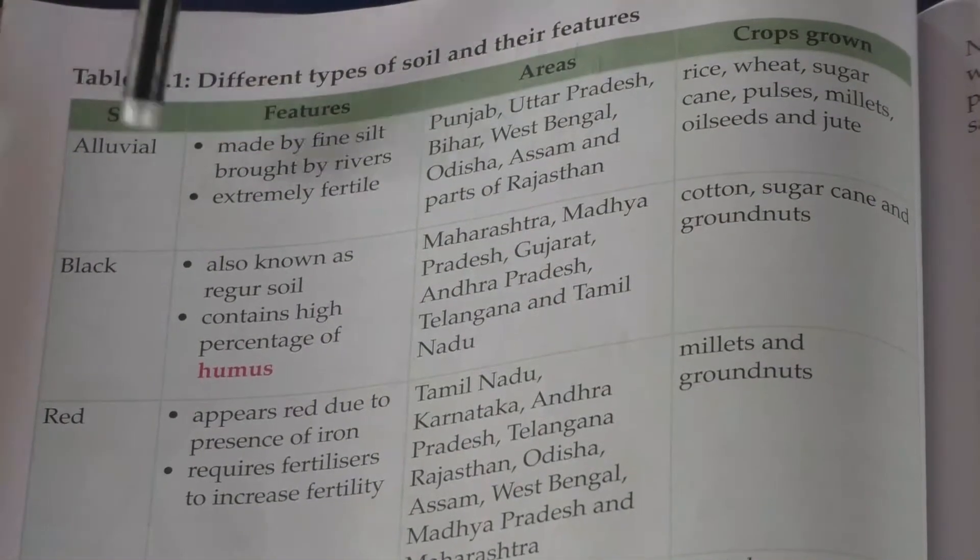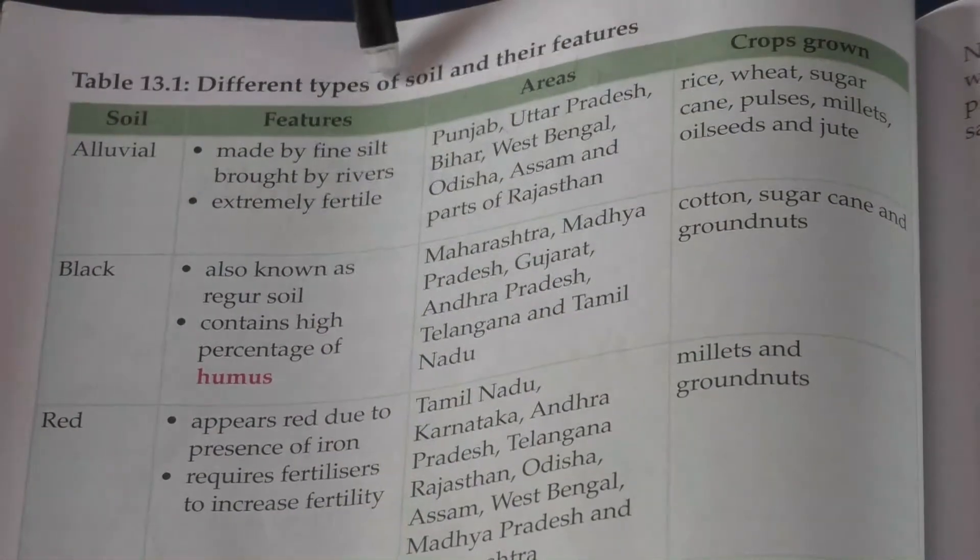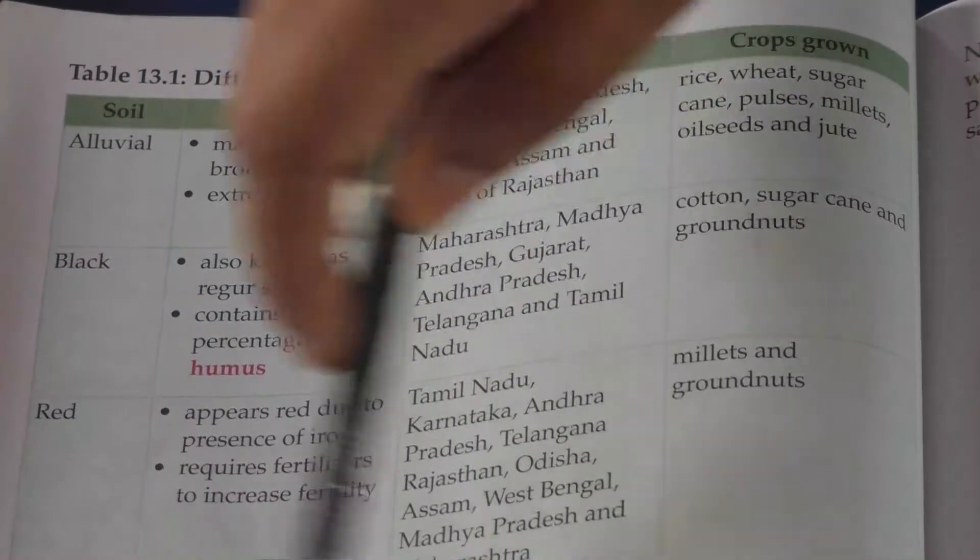Alluvial soil is one type of soil. Red soil and black soil we have also discussed — where we can see these types of soil, in the southern plateau. And there is also desert soil, mountain soil, and laterite soil. There are six types of soils we can see in our country, and we are going to discuss each of them and their features.